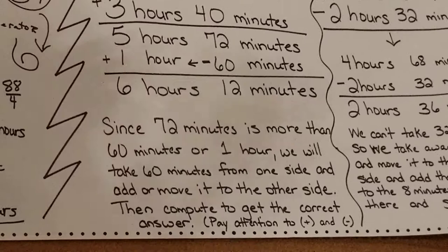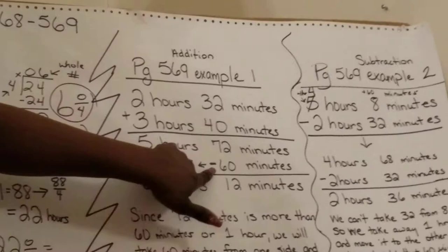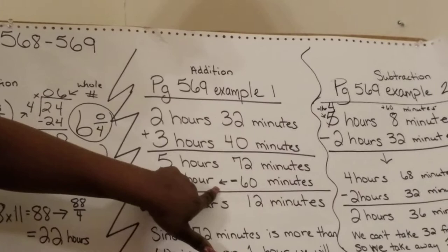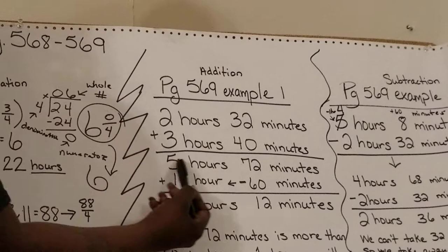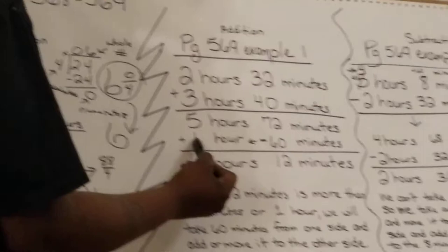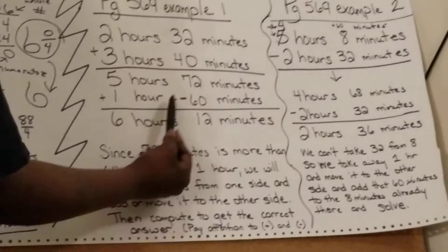I have 5 hours and 72 minutes. Since 72 minutes is more than 60 minutes or an hour, we would take 60 minutes from that 72 minutes and move it and make it an hour. Remember, we're doing two steps here. We're taking the 60 minutes to make one hour and moving it from 72 minutes and putting it over here. Then I have 5 hours 72 minutes plus 1 hour. 5 plus 1 is 6. But here I have a minus. 72 minutes minus 60 minutes equals 12 minutes.